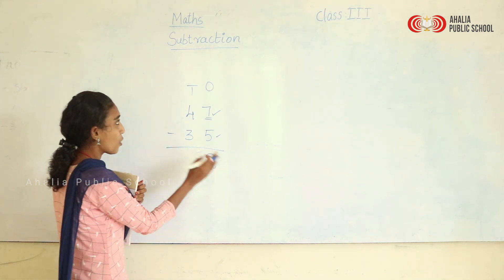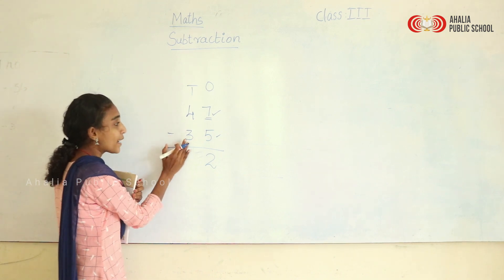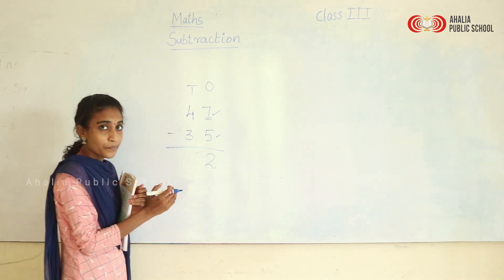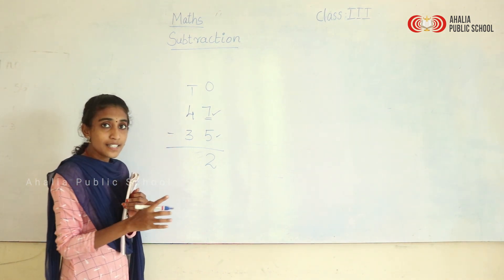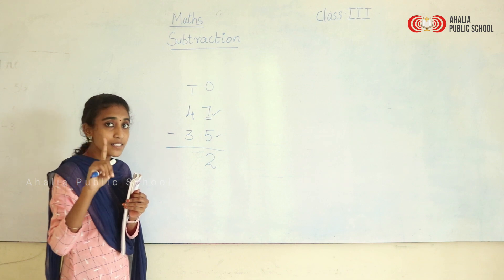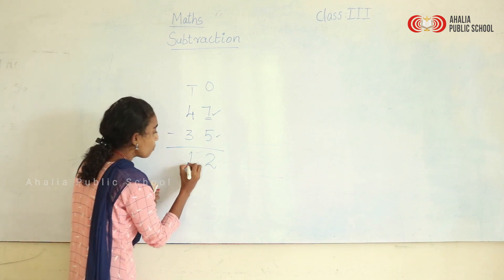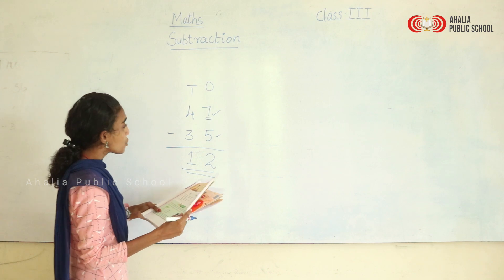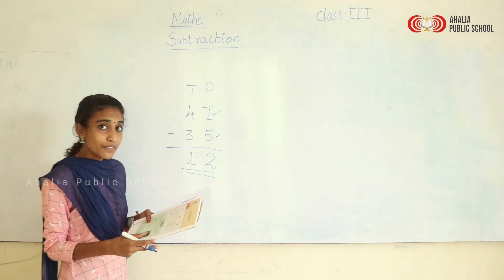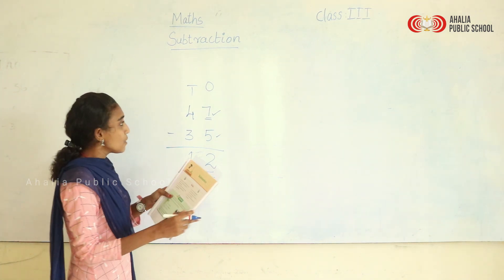Now moving on to the tens place: 4 minus 3. That is easy, right? 4 minus 3 is 1. So here we got the answer as 12.